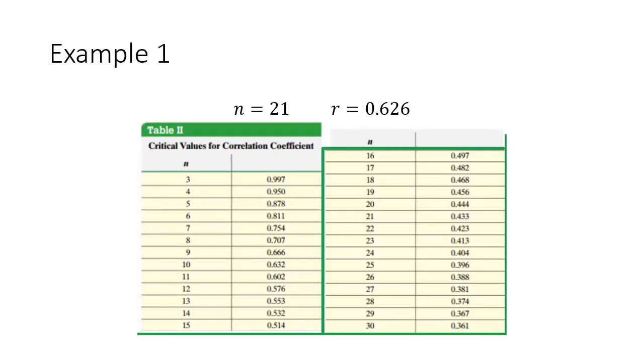My sample size was 21, so we want to find where 21 is with our sample size, and then we find what's the related correlation coefficient, what's called the critical value. In this case, the critical value is 0.433, and our r value is 0.626.